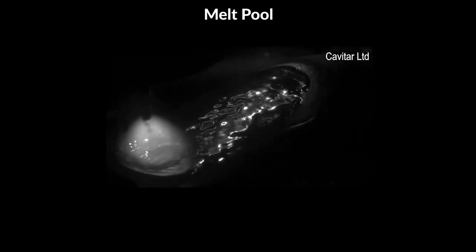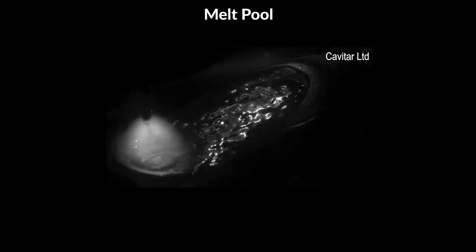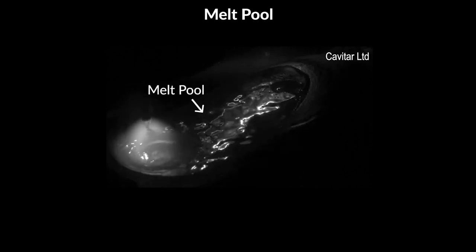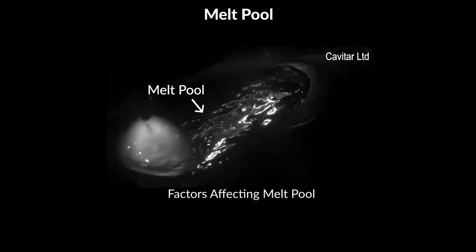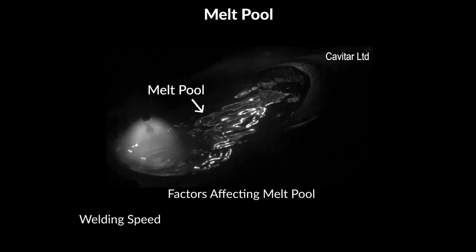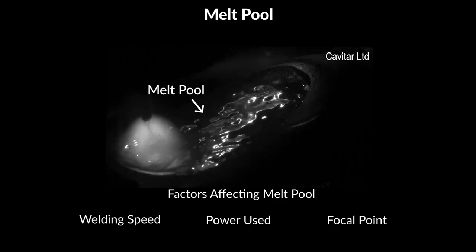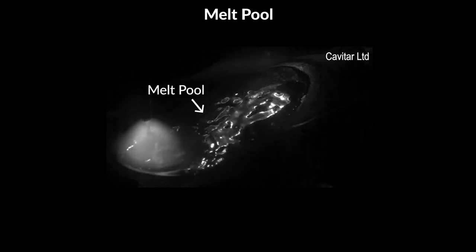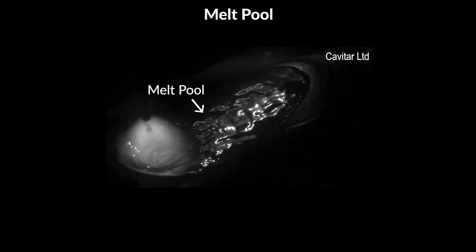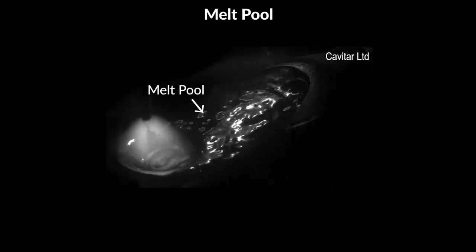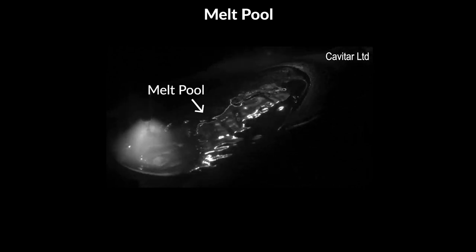6. Meltpool. Meltpool refers to melted weld metal that has not yet solidified, found at the spot currently being welded. Factors that affect the shape and behavior of the meltpool include the welding speed, the power used, and the focal point. Understanding the qualities of the meltpool is important for optimizing the incorporation of filler material droplets in the meltpool and, as a result, minimizing the amount of spatter.